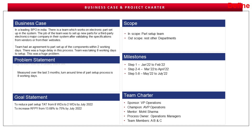The problem statement was that, measured over the last three months, the turnaround time for the part setup process is eight working days. Baselining should be done with the last three to six months of data, and then you can decide what the problem is. Customers will only talk about a subjective problem — you have to put data into it and make it objective.